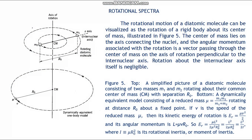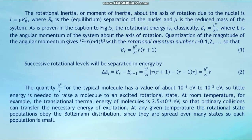The rotational motion of a diatomic molecule can be idealized as rotation of a rigid body about its center of mass. The center of mass lies on the axis connecting the two nuclei. The angular momentum associated with the rotation is a vector passing through the center of mass, perpendicular to the internuclear axis. Rotation about the internuclear axis itself is negligible. The moment of inertia about the axis of rotation due to the nuclei is I = μ r₀², where r₀ is the equilibrium separation of the nuclei and μ is the reduced mass of the system.